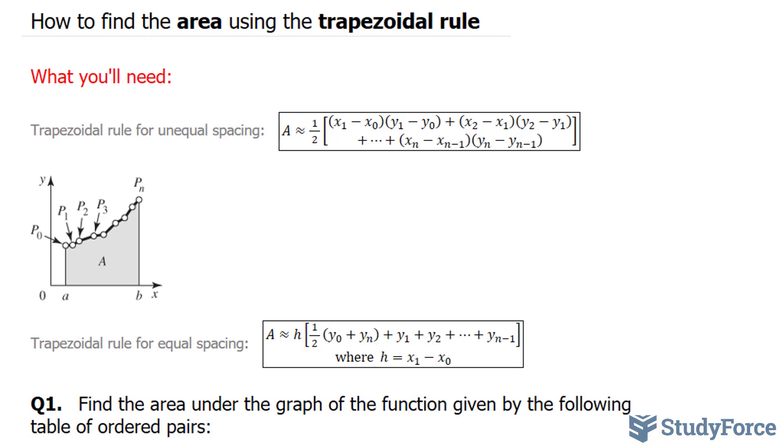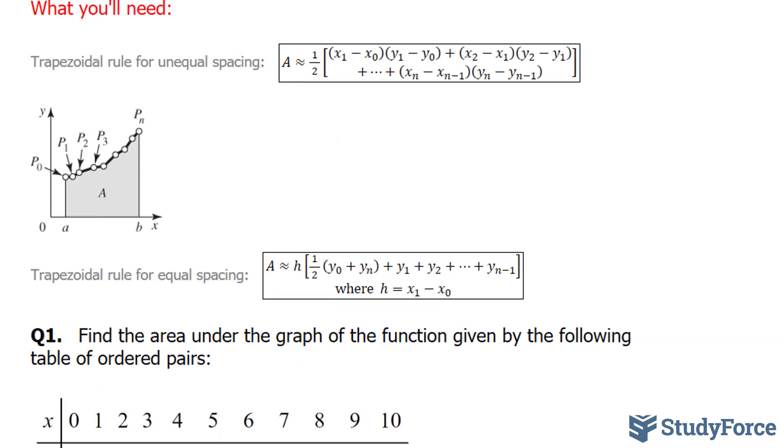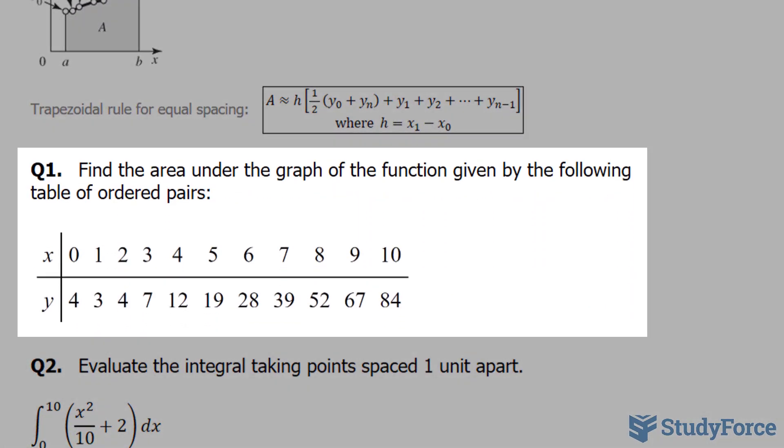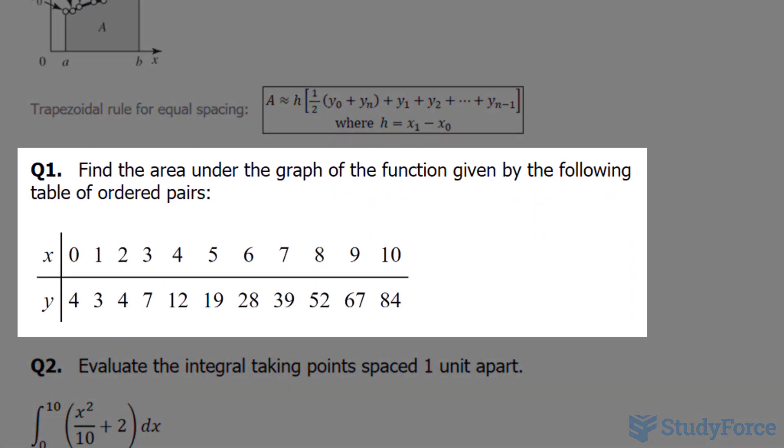An example of unequal spacing, when you would use this formula, is if you have points that are not equally spaced along the horizontal axis. Whereas in our example, in question number 1, they ask us to find the area under the graph of the function given by the following table of ordered pairs.